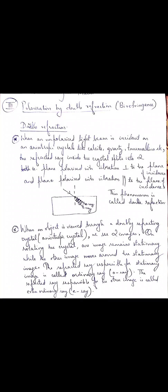Now, when you view an object through a doubly refracting crystal, you get to see two types of images. When you rotate the doubly refracting crystal, one image remains stationary and the other image moves around the stationary image. The refracted ray responsible for the stationary image is called the ordinary ray, and the refracted ray responsible for the moving image is called the extraordinary ray. The ordinary ray has vibrations perpendicular to the plane of incidence and the extraordinary ray is plane polarized with vibrations parallel to the plane of incidence.